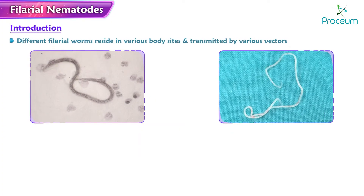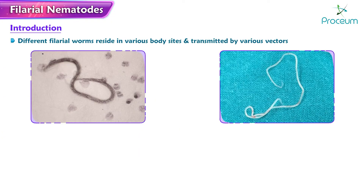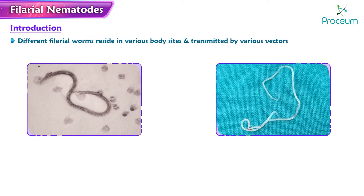Filarial Nematodes: Different filarial worms reside in various body sites and are transmitted by various vectors. These are known to cause deadly acute as well as chronic infections in humans.